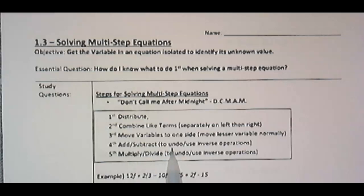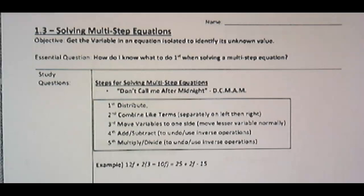Normally I'll move the lesser variable. Fourth, add or subtract to undo slash use inverse operations. And then multiply or divide. So go ahead and get into this first problem.